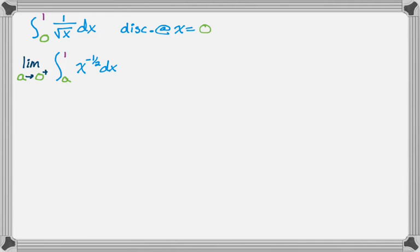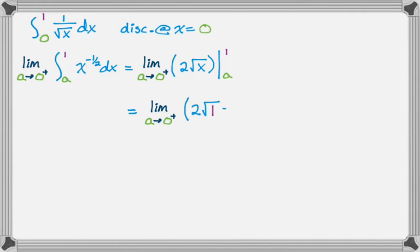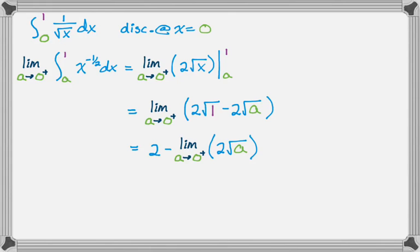I've rewritten it as x to the negative one-half to make taking the antiderivative easier. We write the limit again — it's plus 1 times the reciprocal. You keep writing the limit as long as an a appears anywhere in the problem. Using the fundamental theorem, the first part evaluates to 2, and then we subtract the limit. As a approaches 0 from the right, that term approaches 0. So the answer is 2 minus 0, which equals 2. This integral converges to the value of 2.